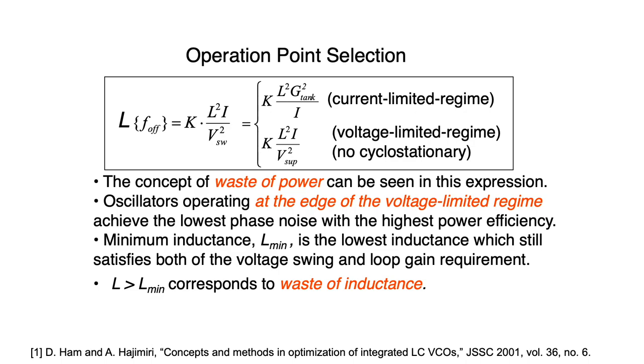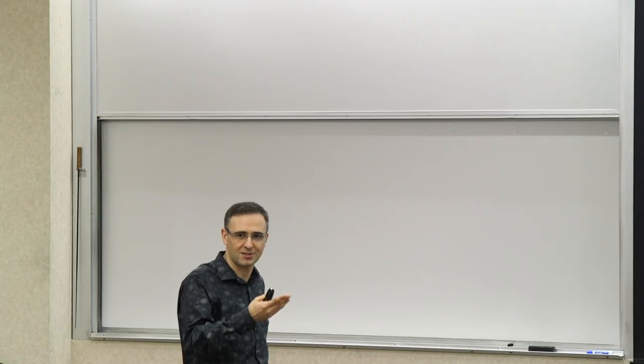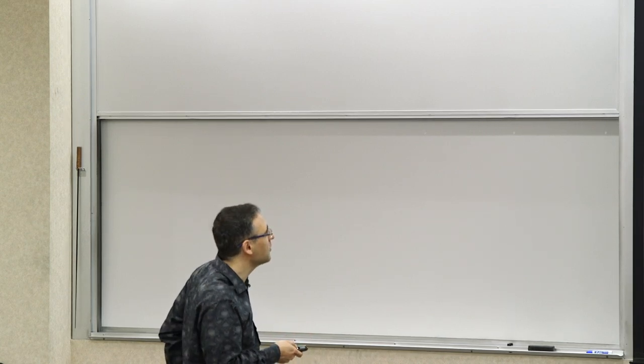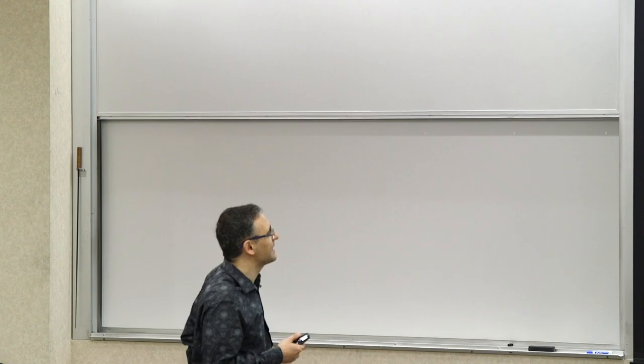Which means that if you increase the current, what happens to the phase noise in a current-limited regime? Your phase noise improves, becomes smaller, right? It's a noise-to-signal ratio. Phase noise is a noise-to-signal ratio. So basically, it improves.